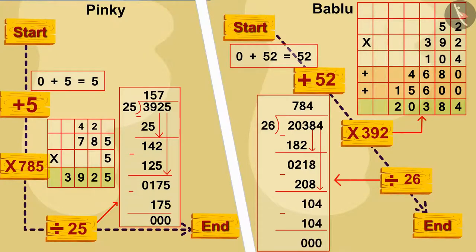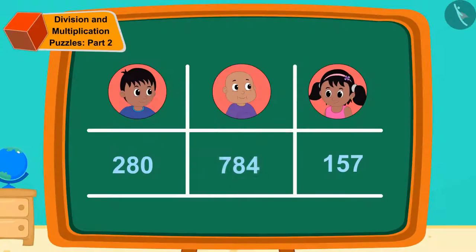Well done, children. You have solved it absolutely correctly. Bablu got the most. 784 gold coins.